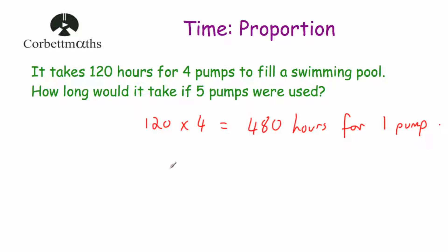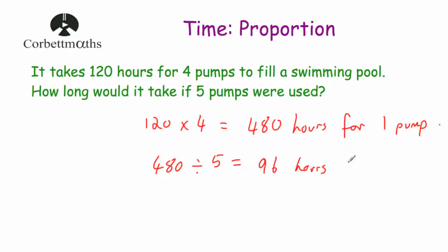Now we know that it takes 480 hours for 1 pump to fill the pool. We want to find out how long it'll take if 5 pumps fill the pool. Obviously if 5 pumps are being used, it's going to take a lot less time — it'll take a fifth of the time. So if we take 480 hours and divide it by 5, we get 96. So it'll take 96 hours for 5 pumps to fill the swimming pool.